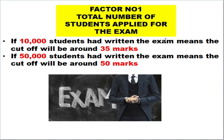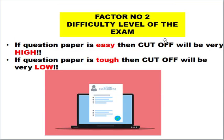Factor number one is the total number of students who applied for the examination. For example, if 10,000 students have written the examination, the cutoff will be around 35 marks out of 200. But if 50,000 students write the examination the next year, the cutoff will go higher. So: lesser the number of students, lesser the cutoff; greater the number of students, greater the cutoff. Factor two is the difficulty level of the question paper — if the paper is easy, the cutoff will be very high; if it is tough, the cutoff will be very low.